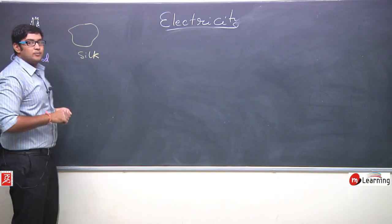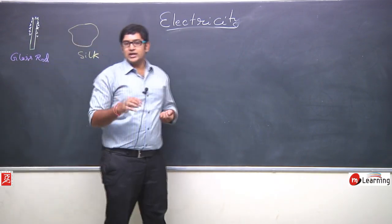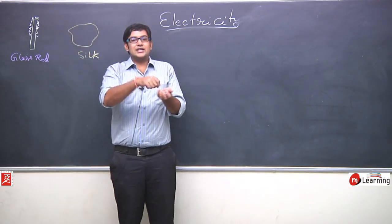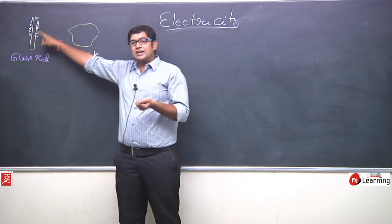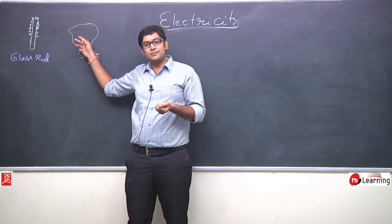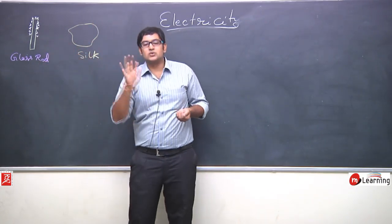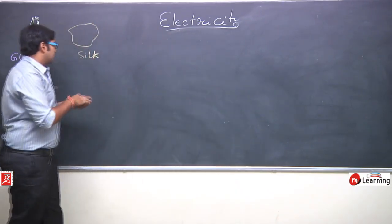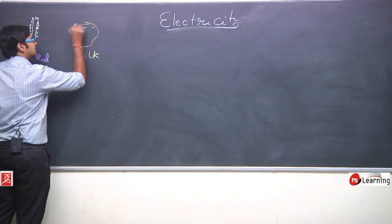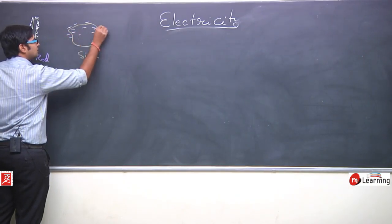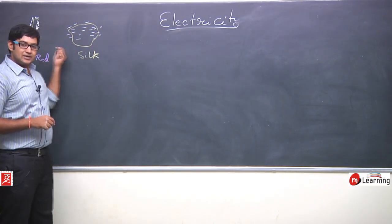Positive charge accumulates on the glass rod because the electrons from the portion rubbed transfer to the silk. So silk gains electrons and glass rod loses electrons. The glass rod gets positively charged and the silk gets negatively charged.